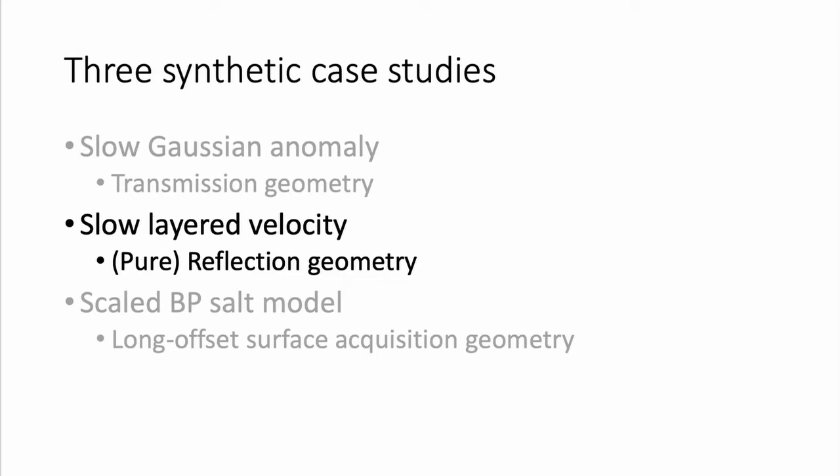The second example is a layered medium with a slow velocity layer — a notorious problem for tomography because you don't see that layer. Even reflection FWI is very challenging here, as everyone knows. The true layer model has approximately 2800 m/s, 1800 m/s, a slightly faster layer, and the fastest bottom layer.